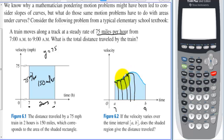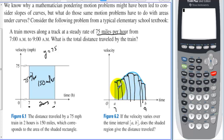There would certainly be some error involved, but what if instead of about 8 rectangles, we did 8 million rectangles? There would be very little error. Calculus is going to take this to infinity and actually get the actual area under the curve — or the distance that the train traveled — even though the speed is not constant. The speed varies.